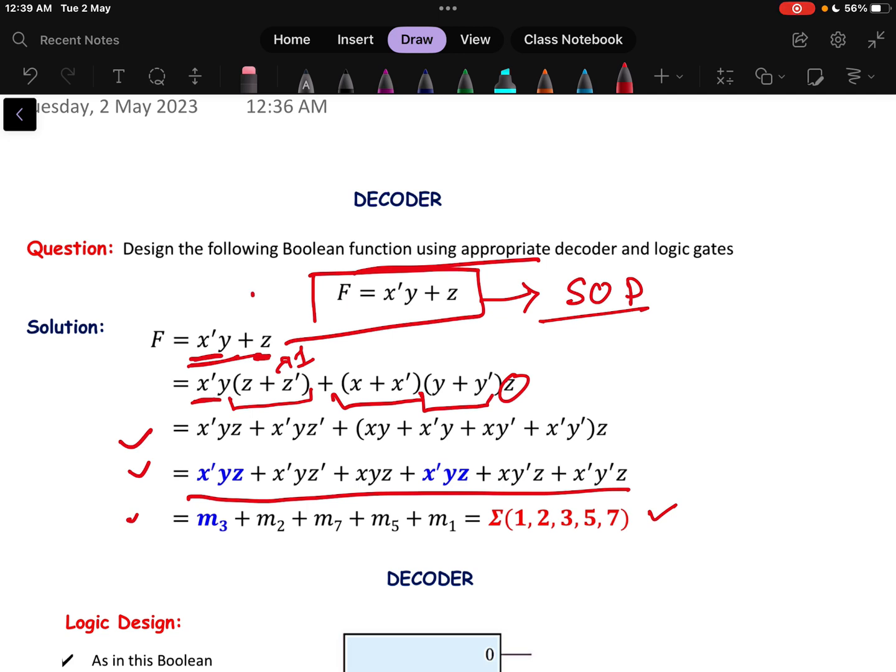In the exam either you will get a question like this or you may get that F equals to something like that written. If it is written like this that means you're already at this step and then you need to implement it. If it is written in this Boolean expression format then you have to convert that to a SOP format.